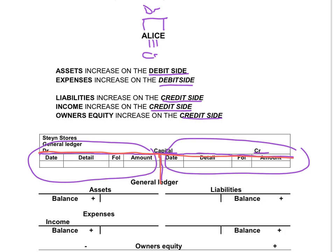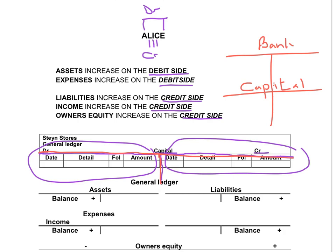It is very important to remember that when you do the ledger accounts, you will open two accounts. For instance, the owner contributes money to the business and we deposit the money immediately. I will write the name of the account at the top of the T. The debit side is on the left-hand side and the credit side is on the right-hand side. If we receive money, we will put the money in the bank — bank is an asset, so you will debit the asset account with one thousand rand. Because I entered this entry on the debit side, I have to complete a double entry on the credit side, and I will credit the capital account on the credit side.